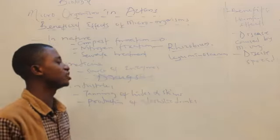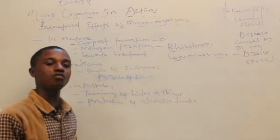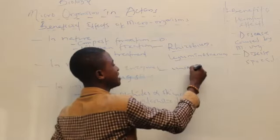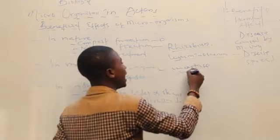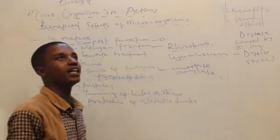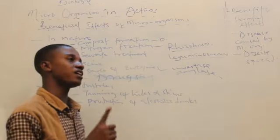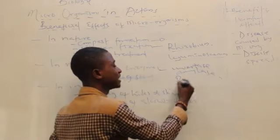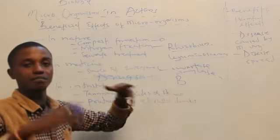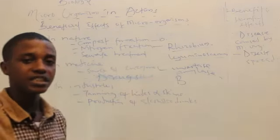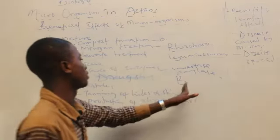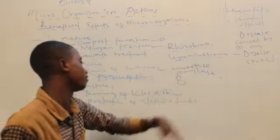In medicine, microorganisms have contributed as a source of enzymes. Yeast, which is a type of fungi — Saccharomyces cerevisiae — produces enzymes such as invertase and amylase. By extension, microorganisms are also very important in the production of vitamin B. Vitamin B is a complex: B1, B2, B3, B5, B6, B12, and others — but that is a topic for another day.